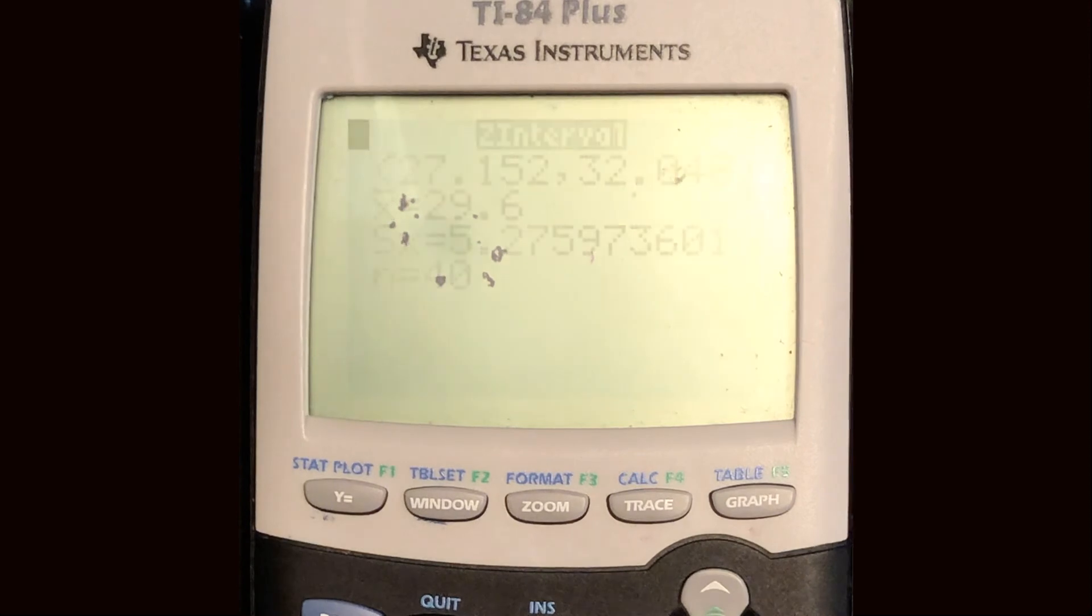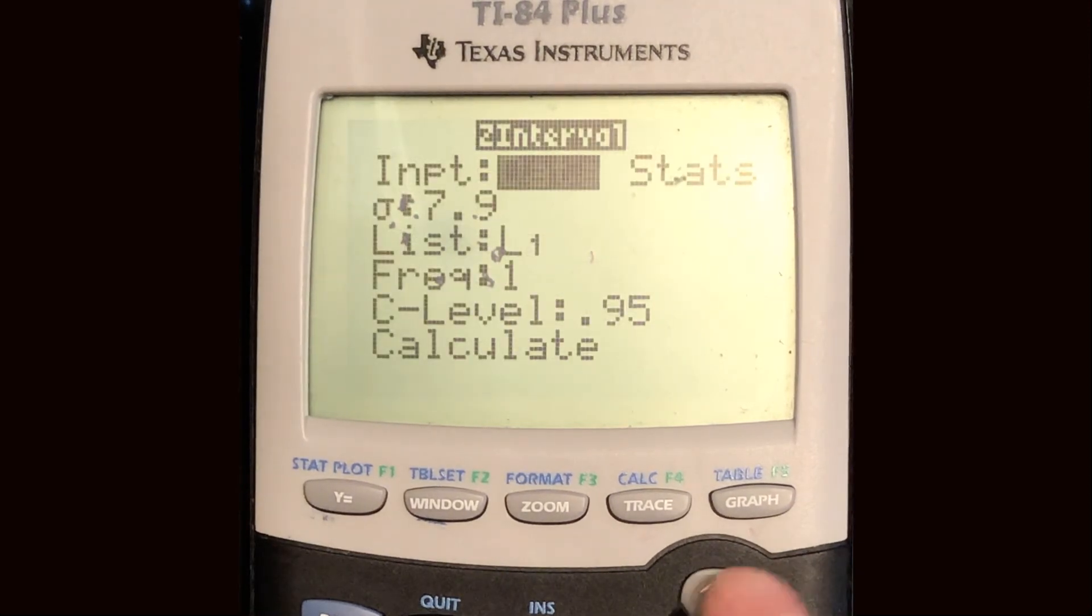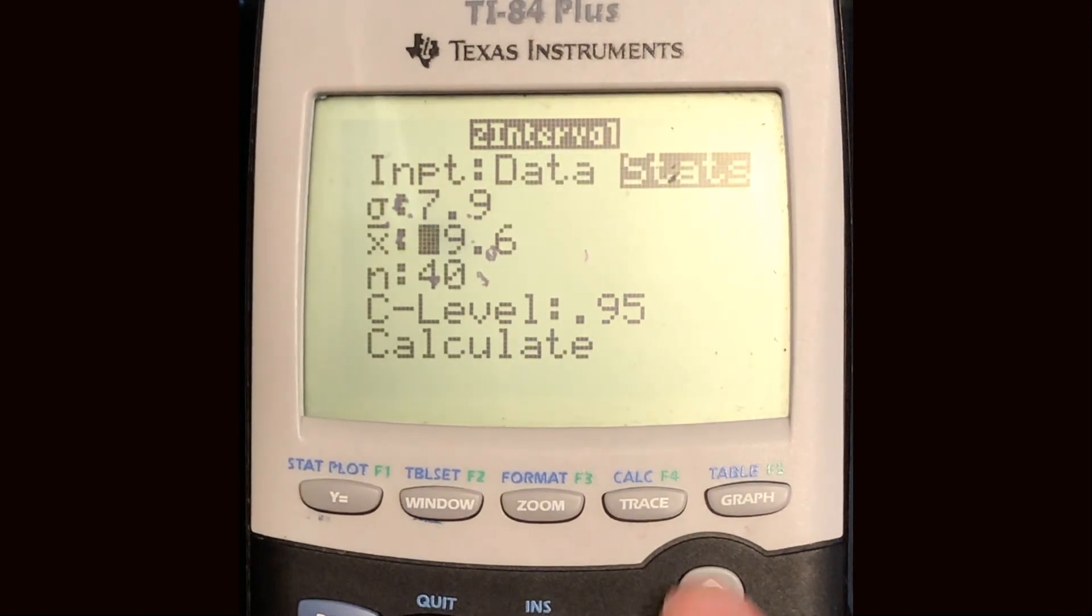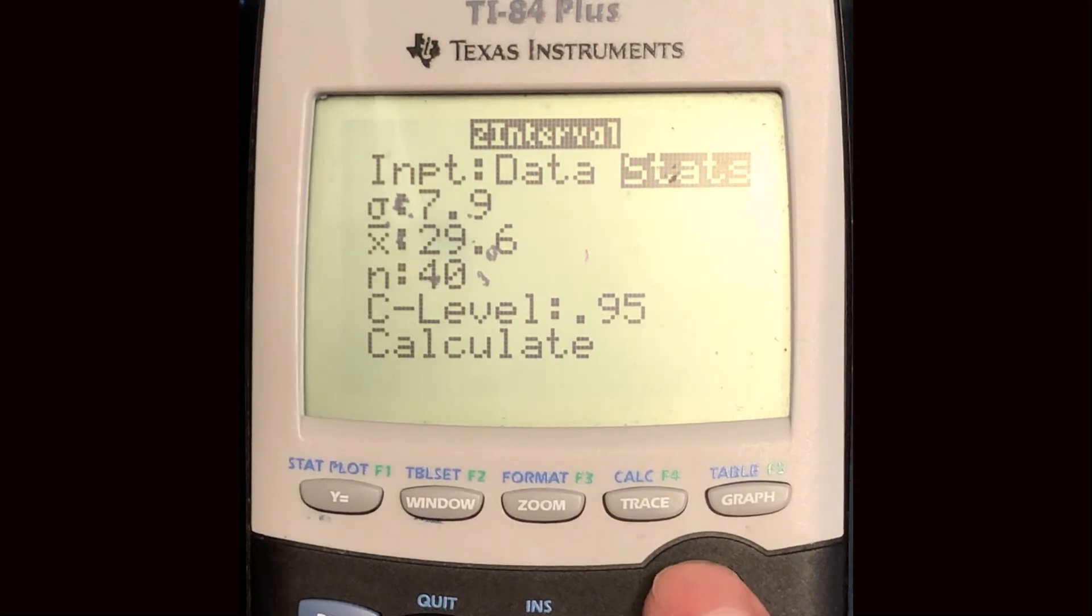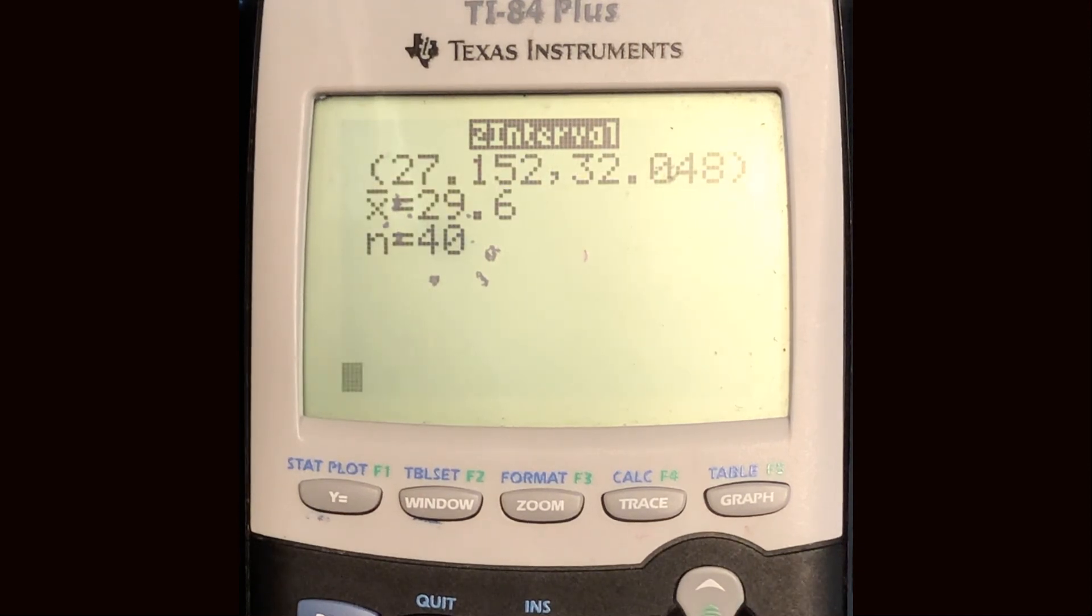Now the other way that I was saying was when you go to tests, go back to z interval, you can choose stats. Now all it's going to ask you for is the mean, the population standard deviation, and the sample size. So if you already knew the mean and the sample size you could have just entered it in here instead of having to enter in all the data into the graphing calculator. But either way, when I calculate, I should get the same answer. So here we go.